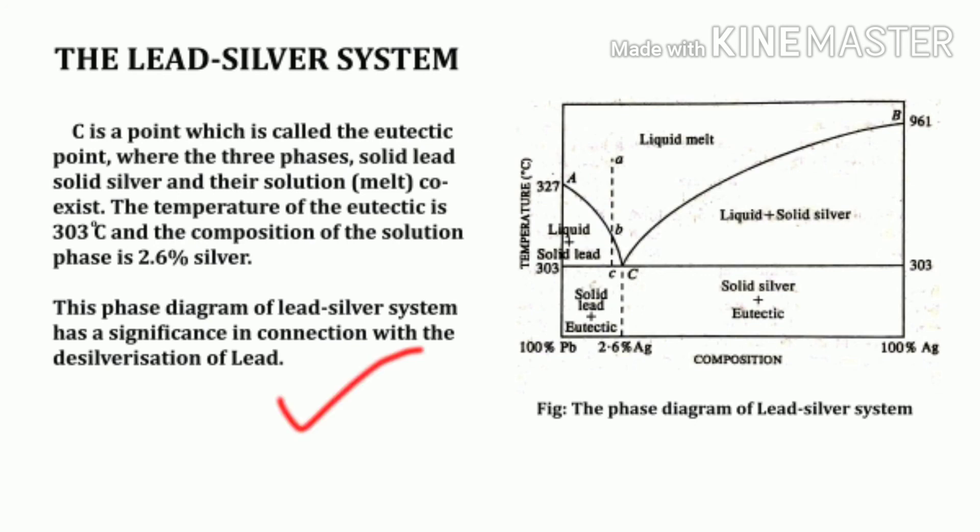Since the mixture of composition corresponding to the eutectic point has the lowest melting point, it is known as the eutectic point. This phase diagram of the lead-silver system has significance in connection with the process of desilverization of lead — one application of this equilibrium diagram.